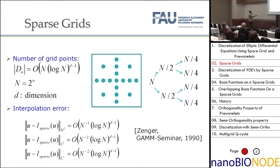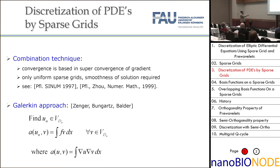The important question is how can we solve PDEs on sparse grids. There are two techniques. One is the combination technique — very simple to implement, but it has a very strong smoothness requirement for the solution. That's the reason why you cannot make it adaptive, and it's not a very useful method for general PDEs.